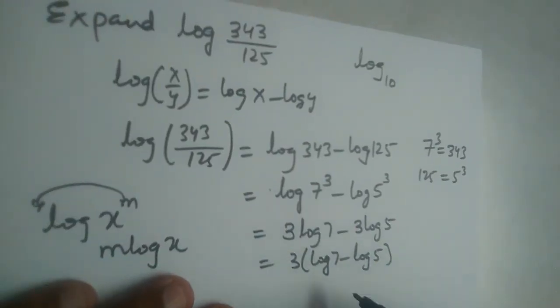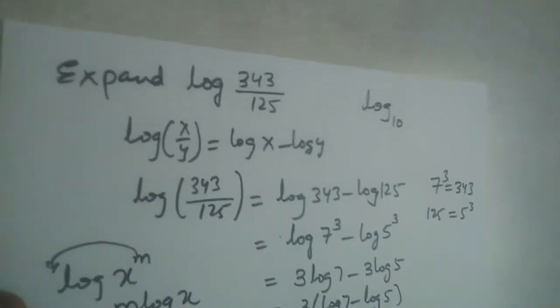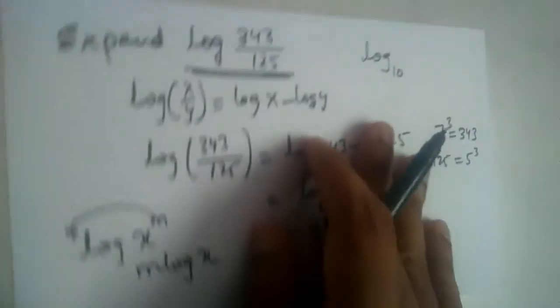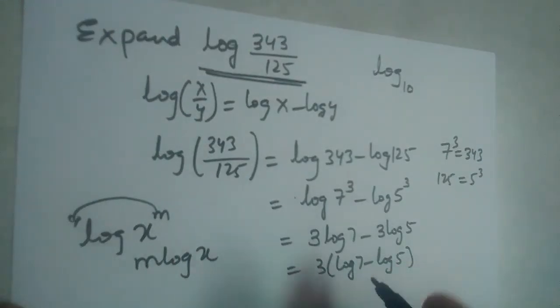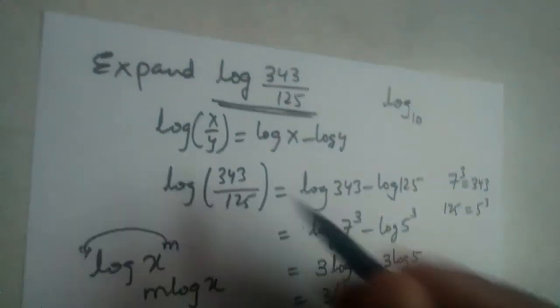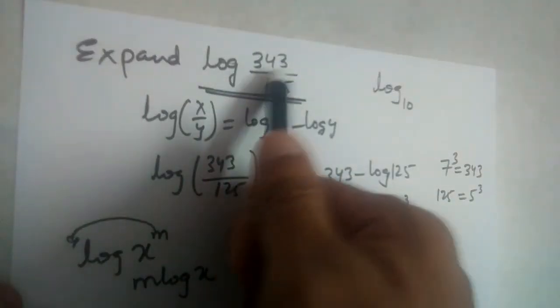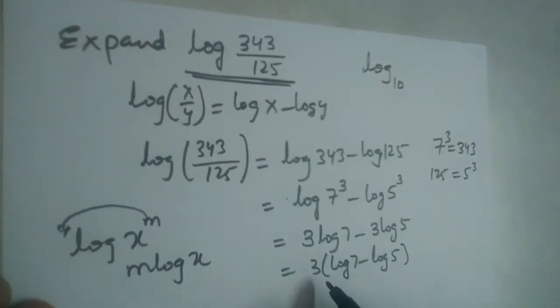This is the expanded form. Expanded form means the question is given as a single log, and we write it as more than one log. The expanded form of log(343/125) is 3(log 7 - log 5).